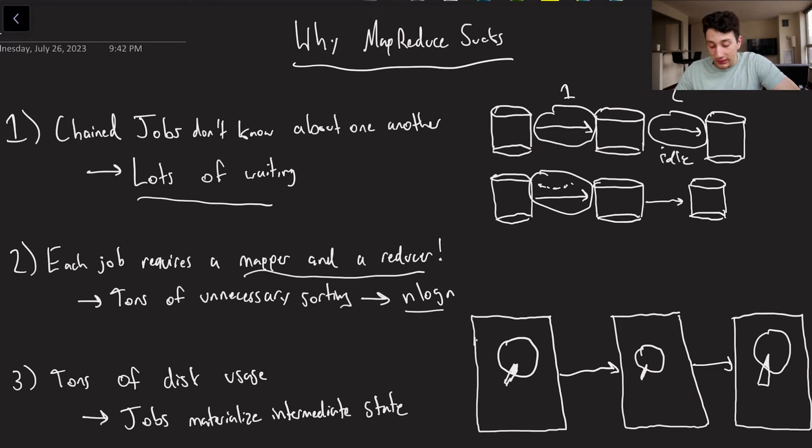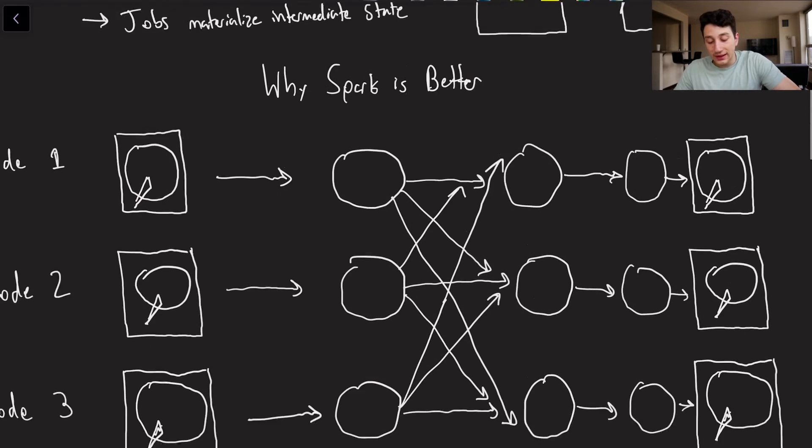Now number three is that we have tons of disk usage. So the issue with having tons of disk usage is that obviously it's expensive, but MapReduce in particular uses lots of disk because jobs materialize intermediate state. So keep in mind that every MapReduce job goes from disk to disk. And when we're chaining them, we only care about the first and the last outcome. We don't care about this middle guy right here. And so wouldn't it be great if we just didn't ever write that to our hard drive because that wastes a ton of time. So these are three main reasons why MapReduce sucks. And as a result of that, Spark tries to improve upon all three of these things.